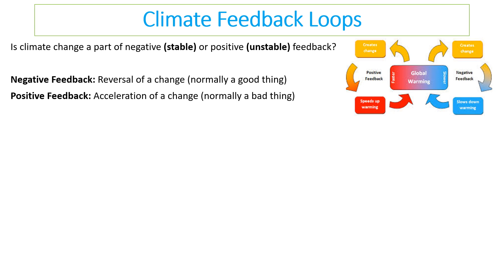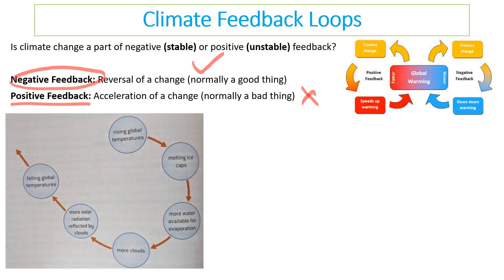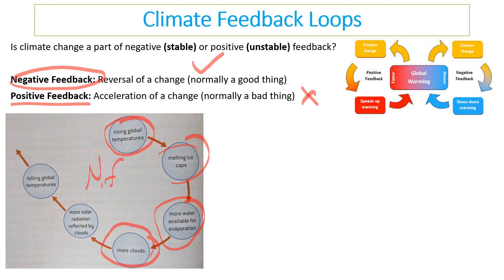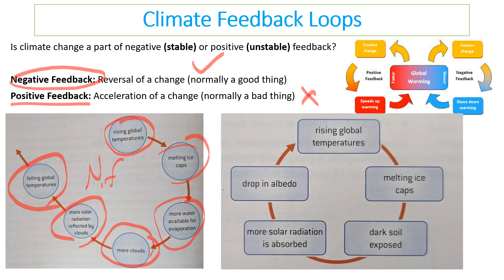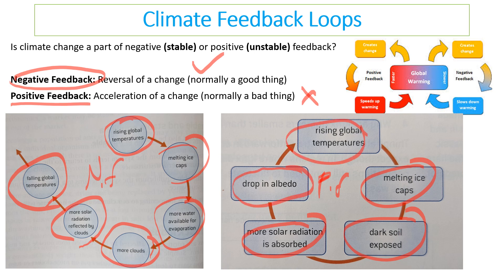We don't really understand what will definitely happen. Climate change is part of a feedback loop — it could move forward via negative feedback, which is actually a good thing, or positive feedback, which is bad. With negative feedback: temperatures rise, ice caps melt, more water is available for evaporation, we get more clouds, more solar radiation is reflected, and global temperatures could fall back down to expected levels. With positive feedback: ice caps melt, exposing dark soil or deep ocean water, more radiation is absorbed, less heat is reflected, and temperatures continue to rise uncontrollably.